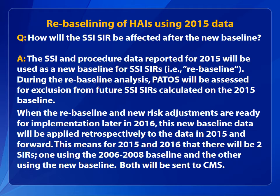The SSI and procedure data reported for 2015 will be used as a new baseline for SSI SIRs. During the re-baseline analysis, PATOS may be excluded from future SSI SIRs calculated on the 2015 baseline. When the re-baseline and new risk adjustments are implemented later in 2016, this new data will be applied retrospectively to the 2015 data. This means there will be two SIRs: one using the 2006–2008 baseline, and the other using the new baseline. Both will be sent to CMS.